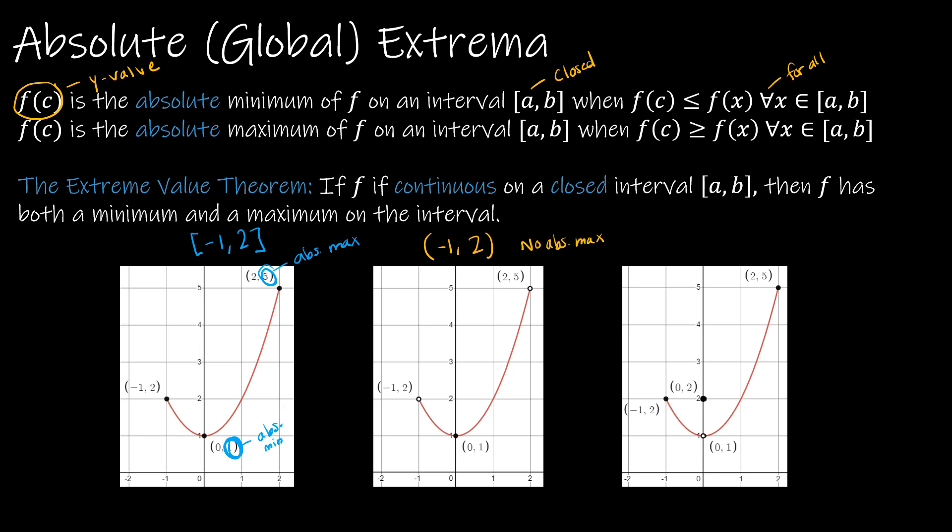No absolute max. Now, you might be saying, what about this point right here before (2, 5)? And the answer is, I can always get increasingly close to (2, 5). I can always get a little bit closer to (2, 5) without actually touching (2, 5) because (2, 5) is not on our function. So I can't use that. However, this value is still the absolute min. Again, because that circle is closed in, it's part of my function.